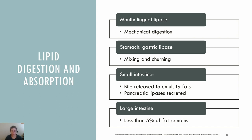Not much digestion of lipids happens in the stomach; most occurs in the small intestine. In the stomach, fat mostly floats on the top of the watery contents. Once in the small intestine, most of the lipids are still undigested and clustered together. The pancreas secretes pancreatic lipase, which further breaks down triglycerides to fatty acids, monoglycerides, and some free glycerol. Bile, which is made in the liver and stored in the gallbladder, is released in the duodenum. Bile helps to emulsify fats, breaking apart large fat droplets into smaller ones. Emulsification makes lipids more accessible to digestive enzymes by increasing the surface area. Bile is reabsorbed in the ileum of the small intestine and sent back to the liver to be used again in digestion.